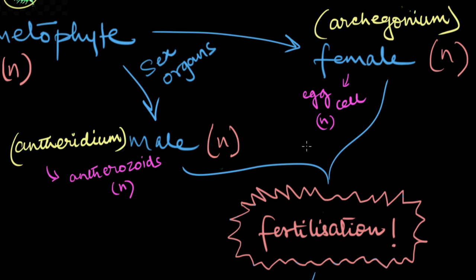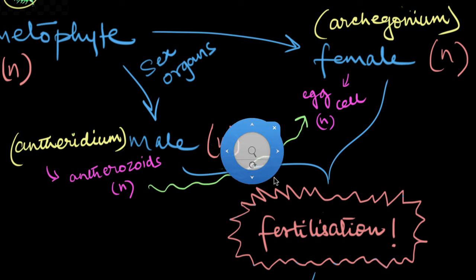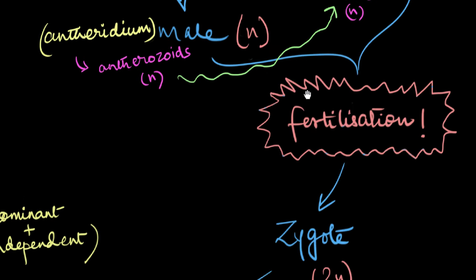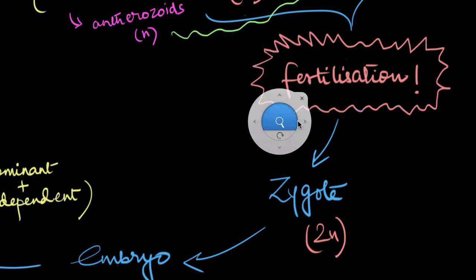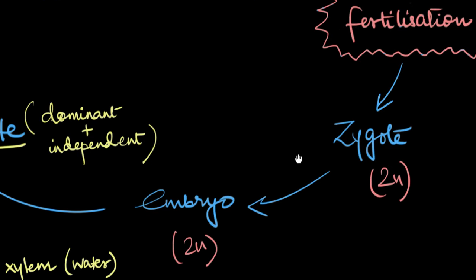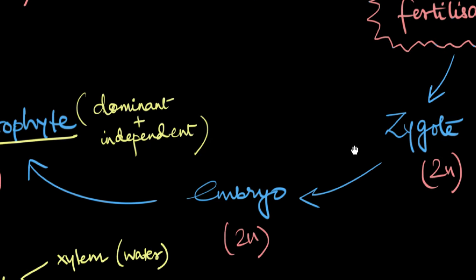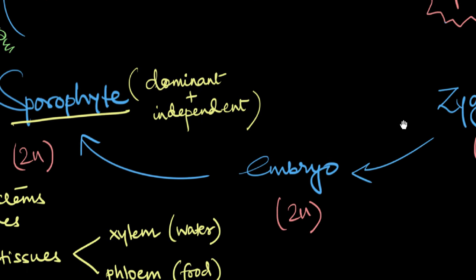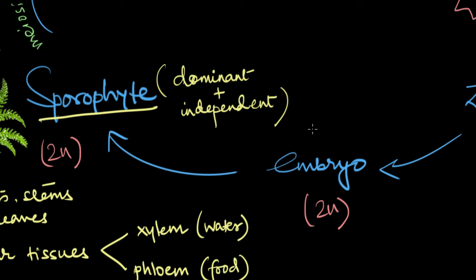To reach the egg cell, the antherozoids or male gametes require water so that when they get released, they can swim all the way up to the egg cell and fertilize it. Once fertilization is done, a diploid zygote is formed. This zygote then develops into an embryo, which further grows up to become the diploid sporophyte, completing the life cycle of the pteridophyte.